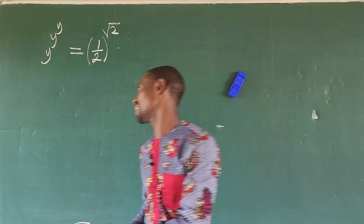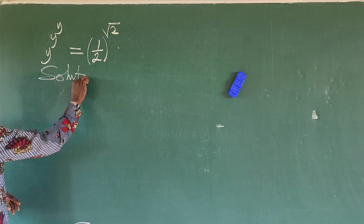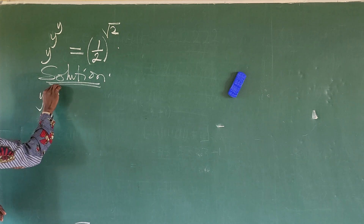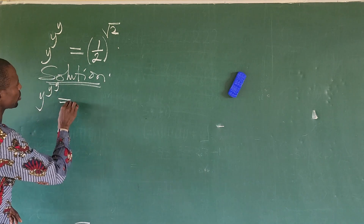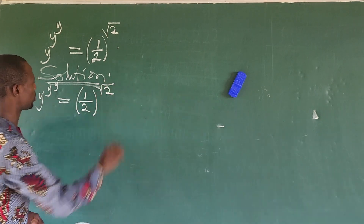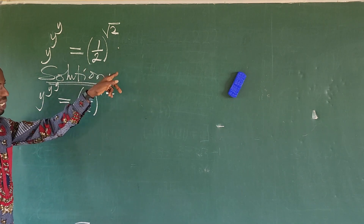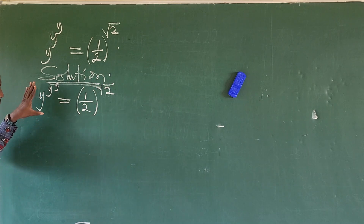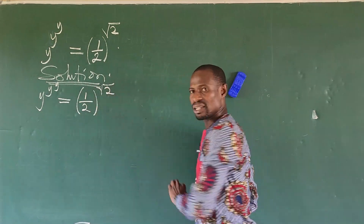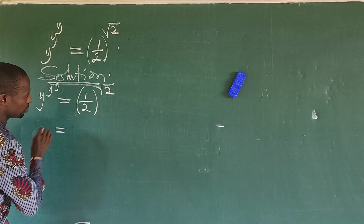Let's go to today's challenge. We put down our question: y to the power of y, all to the power of y, equals 1 over 2, raised to the power of root 2. All we need to do is get a number that you can raise to itself, further raised to itself again on the right-hand side, to equate it to the left-hand side. We are going to work mainly on the right-hand side of this equation.